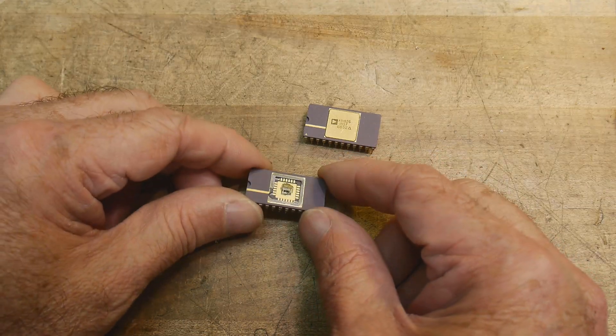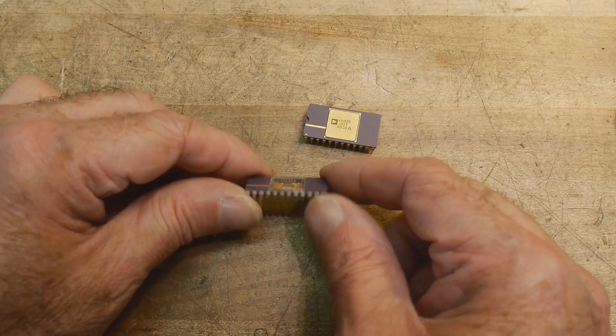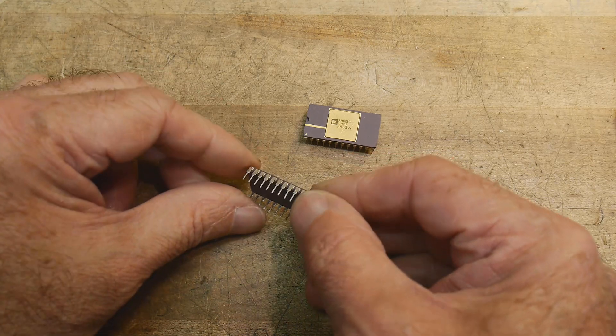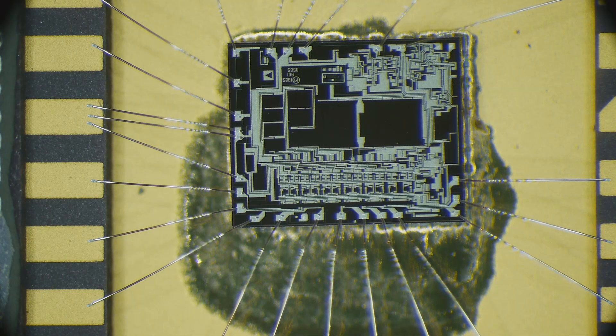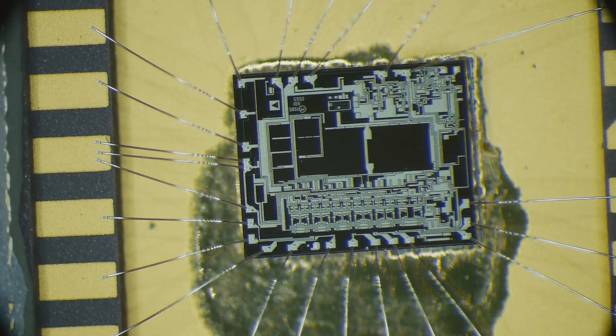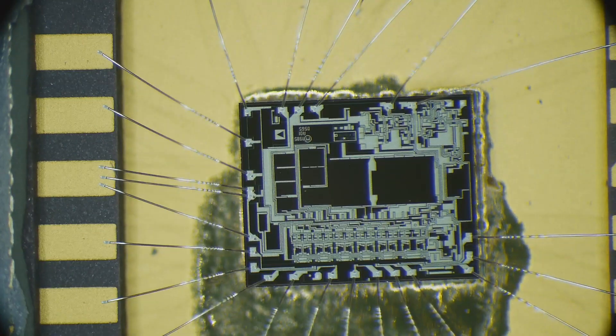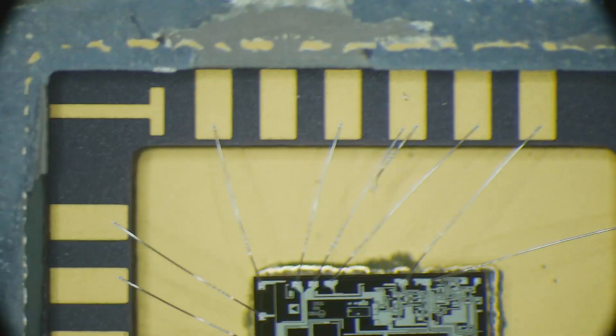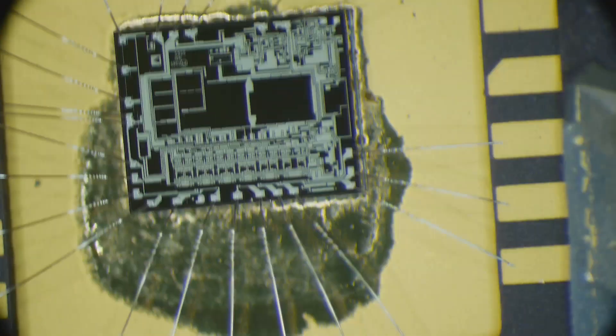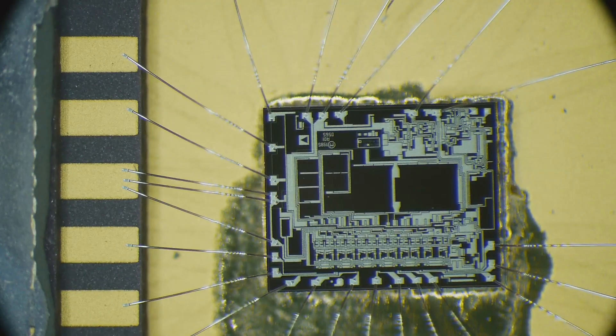You can see it's an analog part, but it's pretty complicated with a lot of stuff going on. You can see the bond pads all the way around the chip, and that's the epoxy down to the substrate there.